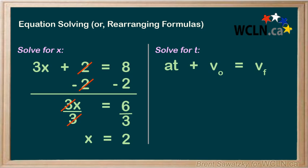In the previous example we started isolating the x by subtracting 2. In this case V0. So let's do the same thing and subtract V0 from both sides. On the left just like before the plus V0 and minus V0 cancel each other out. Perfect. And on the right we have it as Vf minus V0.